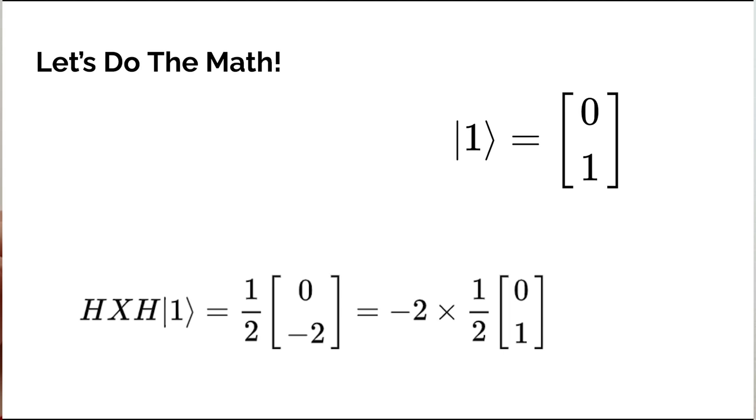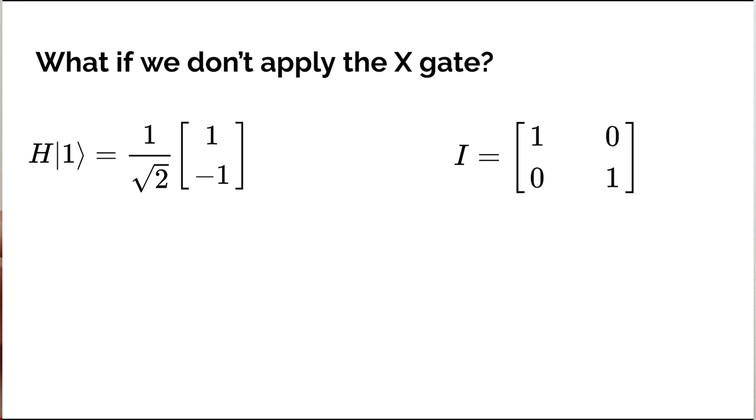So what if we don't actually apply the X gate? If we don't apply any gate, we actually apply the identity gate. The identity gate doesn't change the state. So then let's go back to one of our initial states here, where we applied the Hadamard first and take this. Don't apply the identity gate or, you know, apply it, but it doesn't change it. So we have this state here that we start with, and then we apply another Hadamard on top of it.